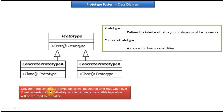Only the first time will a ConcretePrototype object be created using the new operator. After that, whenever the client requests a ConcretePrototype object, a cloned ConcretePrototype object will be returned to the caller. Once the client gets the cloned ConcretePrototype object, the client can modify it as per their requirements. This is how the Prototype design pattern works.